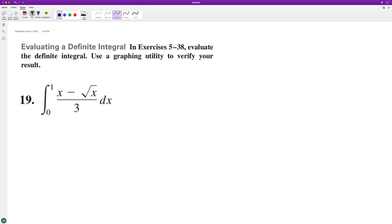First thing we'll do is just divide three by the three. So we have X over three minus square root of X or X raised to the one half over three.